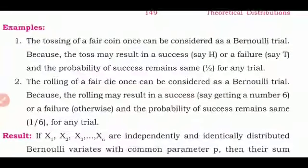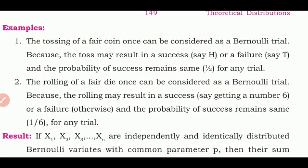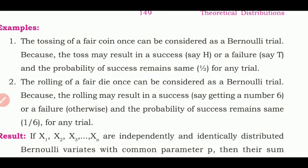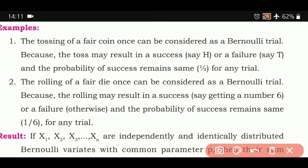Tossing a fair coin is a Bernoulli trial because the toss results in success or failure and the probability of success remains the same for any trial — head and tail each have a 50% chance. Rolling a fair die once is also a Bernoulli trial — for example, getting the number 6 is success or failure otherwise, and the probability of success remains the same at 1/6 for any trial.